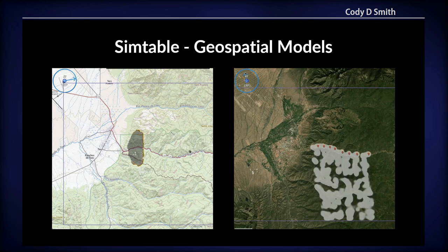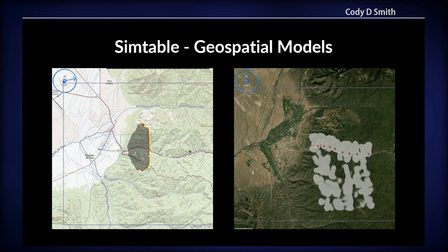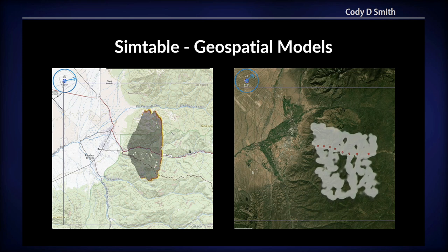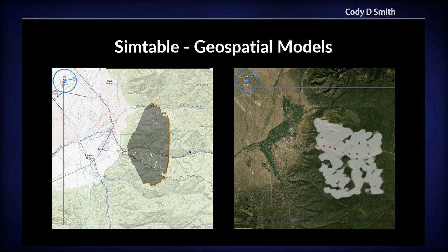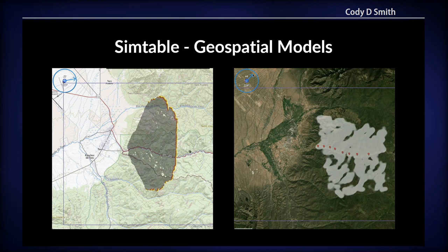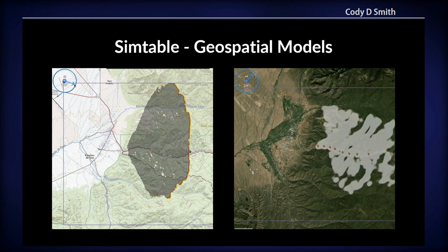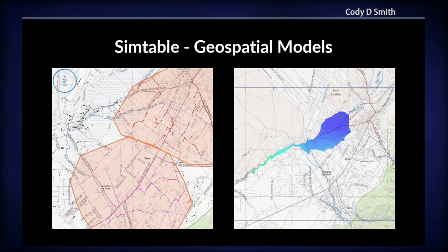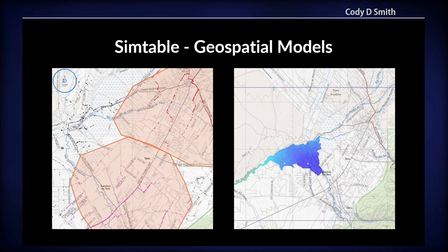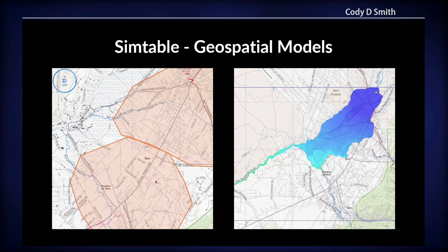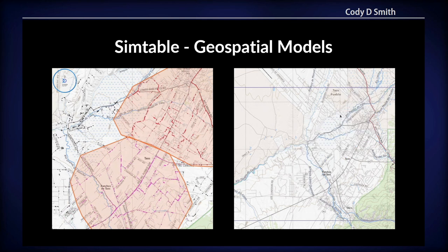Here's an example of some agent-based models on a Slippy map — this is Leaflet. You can see a wind dial in the corner blowing fire to the east. This model takes into account fuel, elevation, and wind. The model on the right is a smoke model that takes into account one wind direction and some topography. We also have a more classic agent-based model where dots representing automobiles are evacuating two polygons — purple dots going south, red dots going north. On the right is a flood model of a canyon area.